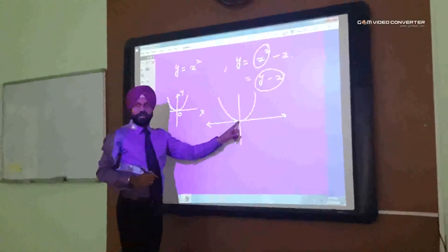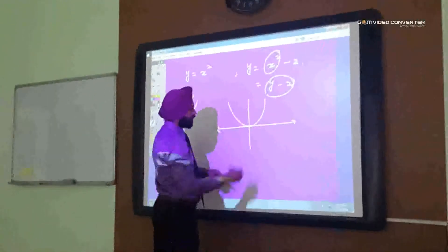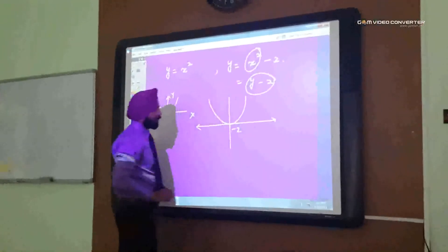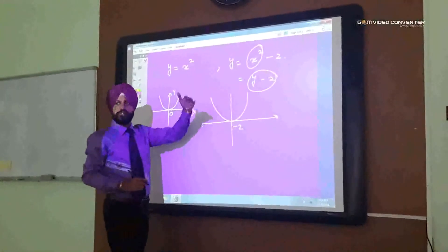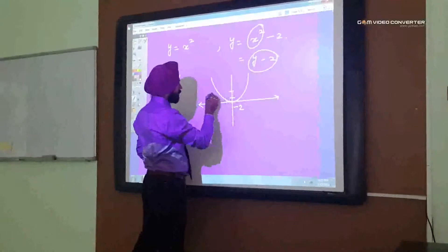But, this point is not 0, rather it is minus 2. So, where will be the 0 then? 0 will be upside, okay? That it is 1 and it is 0.